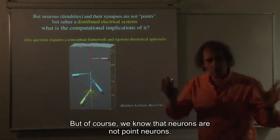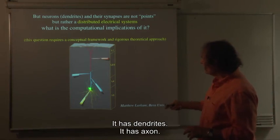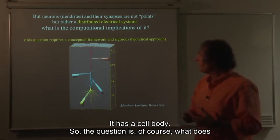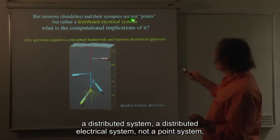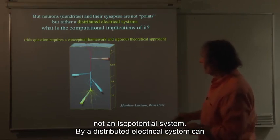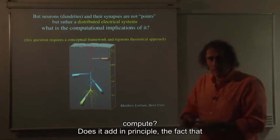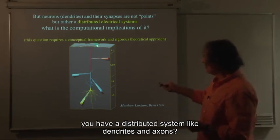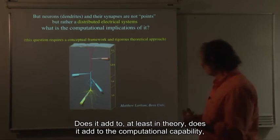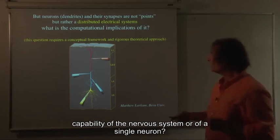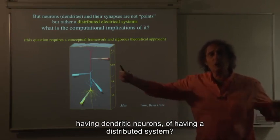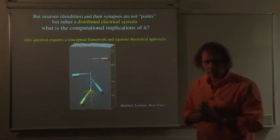But of course we know that neurons are not point neurons, we know that this is a distributed system, it has dendrites, it has axons, it has a cell body. So the question is, what does a distributed system, a distributed electrical system, not a point system, not an isopotential system, by a distributed electrical system, can compute? Does it add, in principle, the fact that you have a distributed system like dendrites and axons, does it add to, at least in theory, does it add to the computational capability of the nervous system or of a single neuron? So this is the question, what is the computational implications of having dendritic neurons, of having a distributed system?